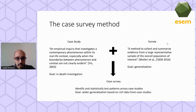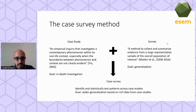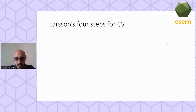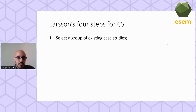The case survey method aims to draw statistical generalizations based on data collected through case studies — in-depth data for more complex phenomena — to achieve wider generalization. The most common guidelines are proposed by Larson, who mentions four steps. The first step is to select a group of existing case studies, not necessarily from peer-reviewed venues, but with an in-depth description of the cases.